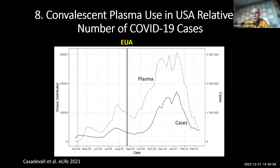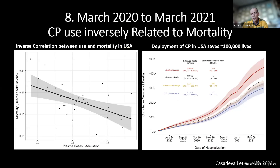Working with blood bankers, we got the data on all usage in the United States. There were weeks where as many as 30,000 units were used. The capacity exists and can be ramped up, and usage largely follows the number of cases. If you plug mortality in the United States versus how much plasma was used, there is a very strong inverse correlation — the more plasma the country used, the fewer people died. From that, we estimate about 100,000 lives were saved in the first year of the pandemic.